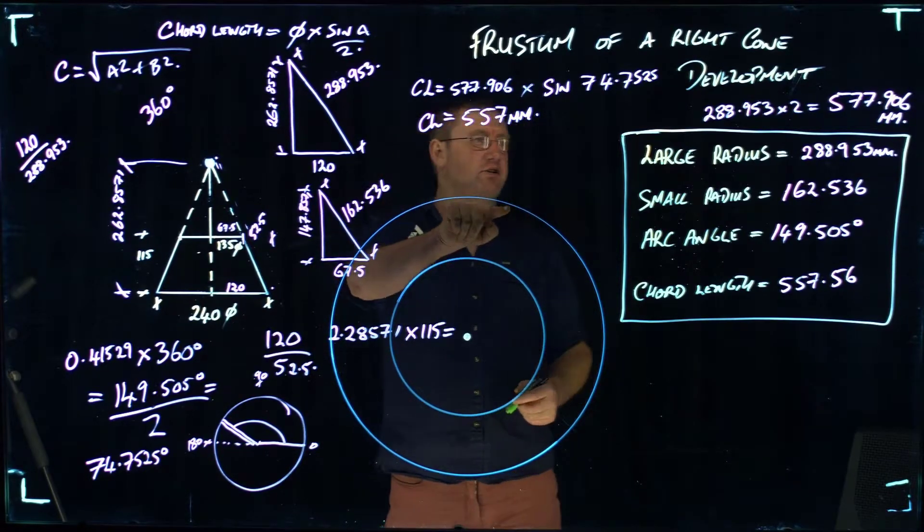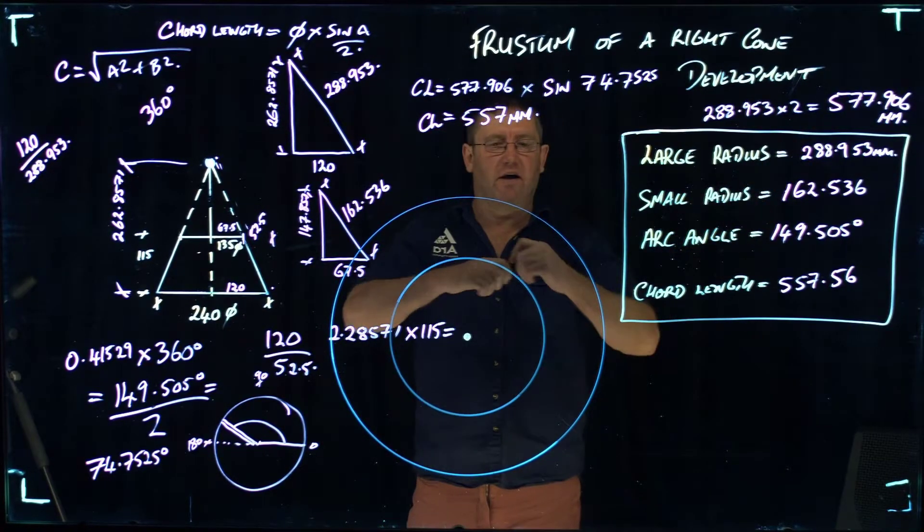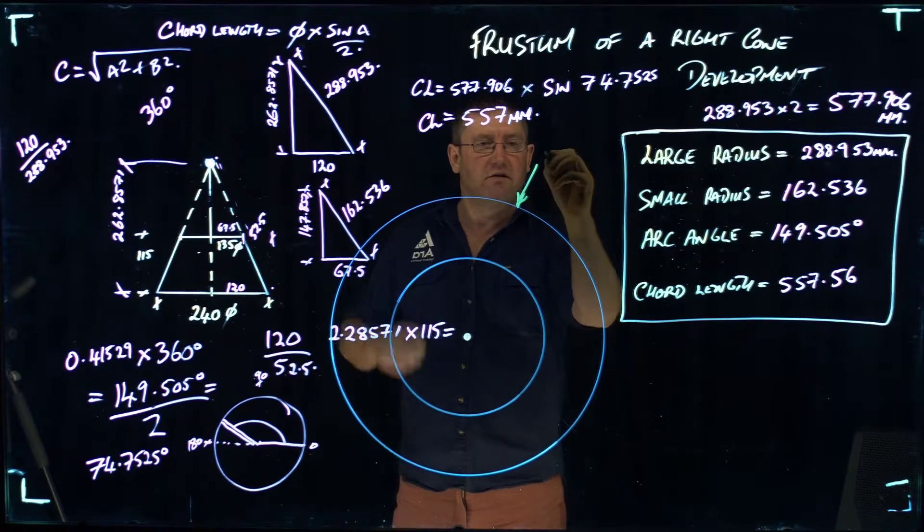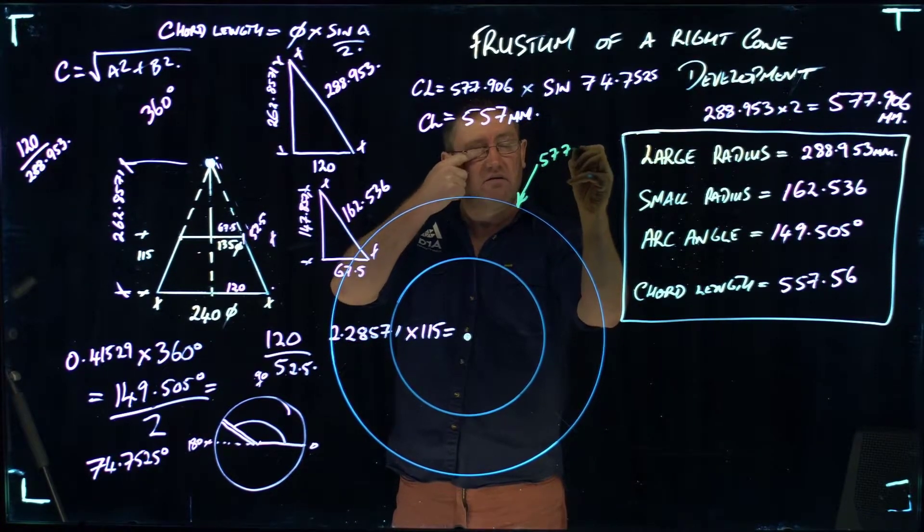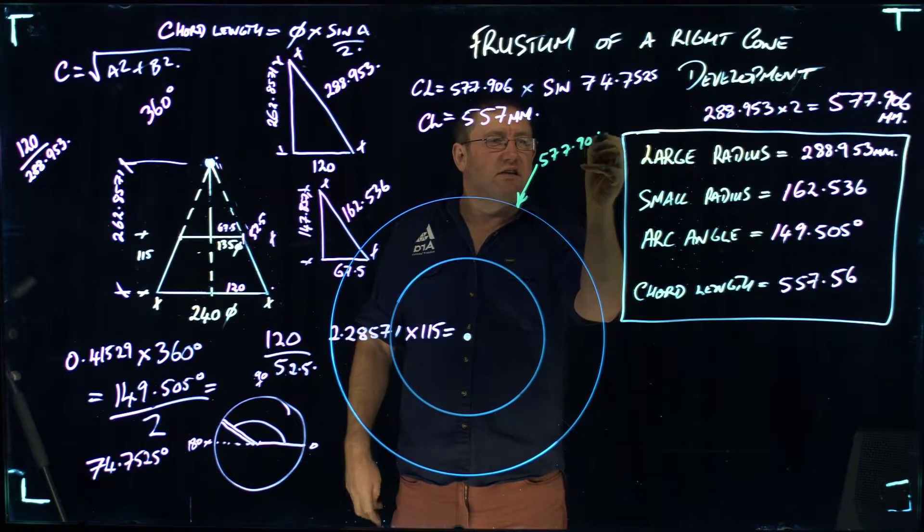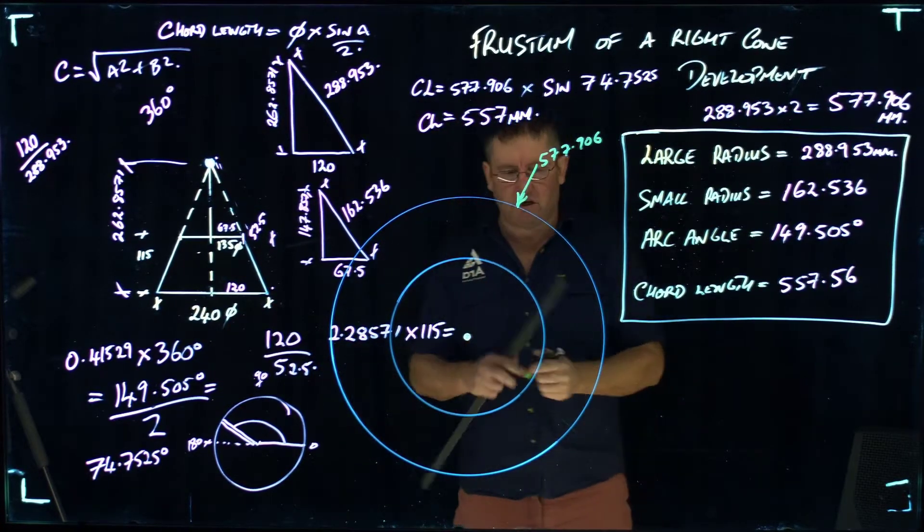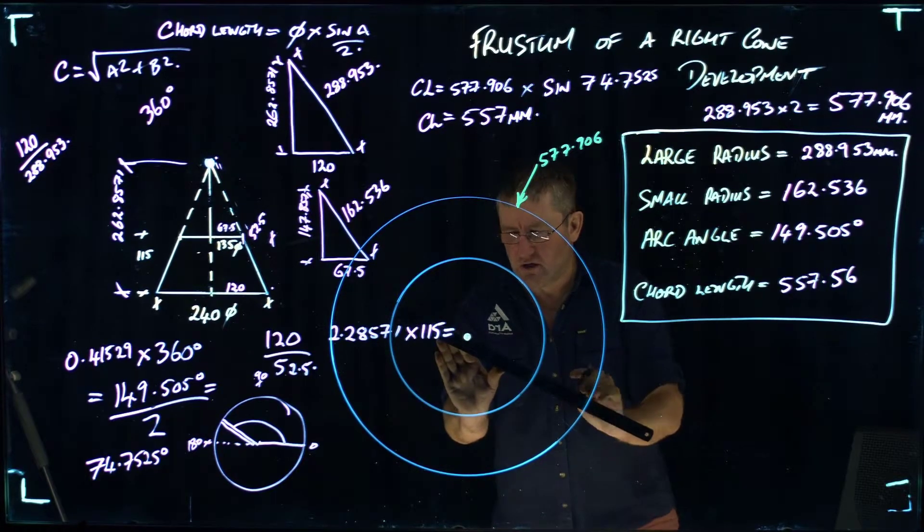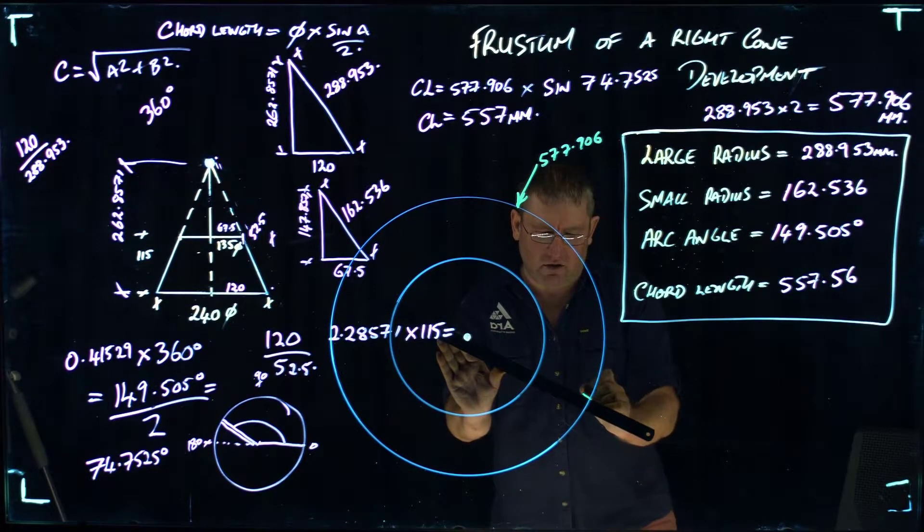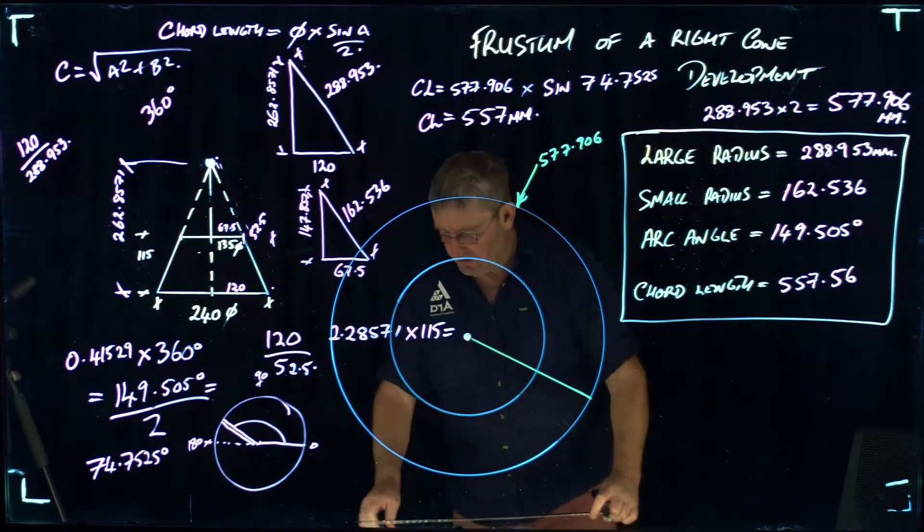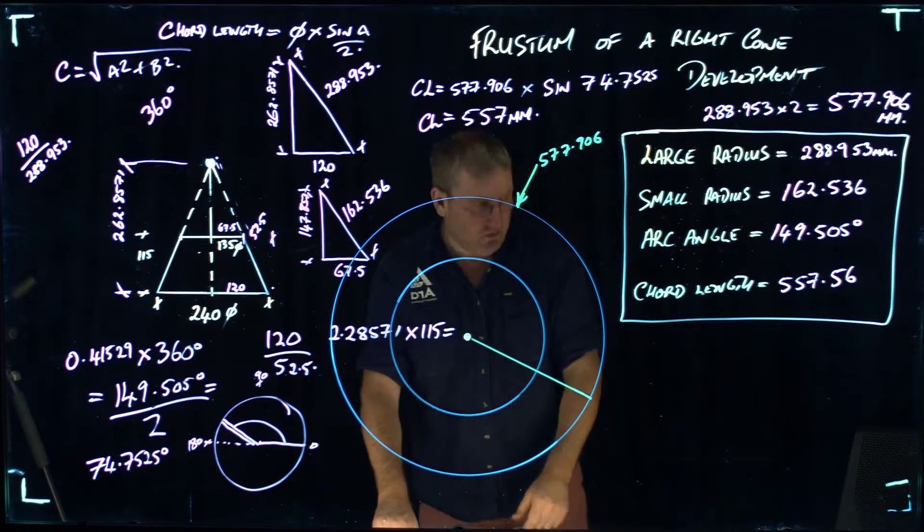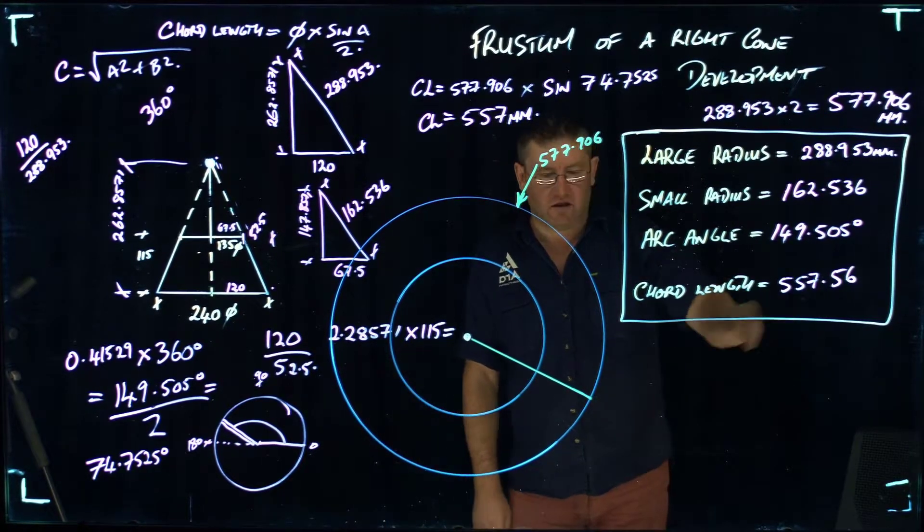The diameter of this circle here was 577 millimeters, 577.906 to be really accurate. If I take a start point, I'm just going to put a line on here. I'm not going to worry about what particular angle that line is. Try and draw it straight. There's a start line.